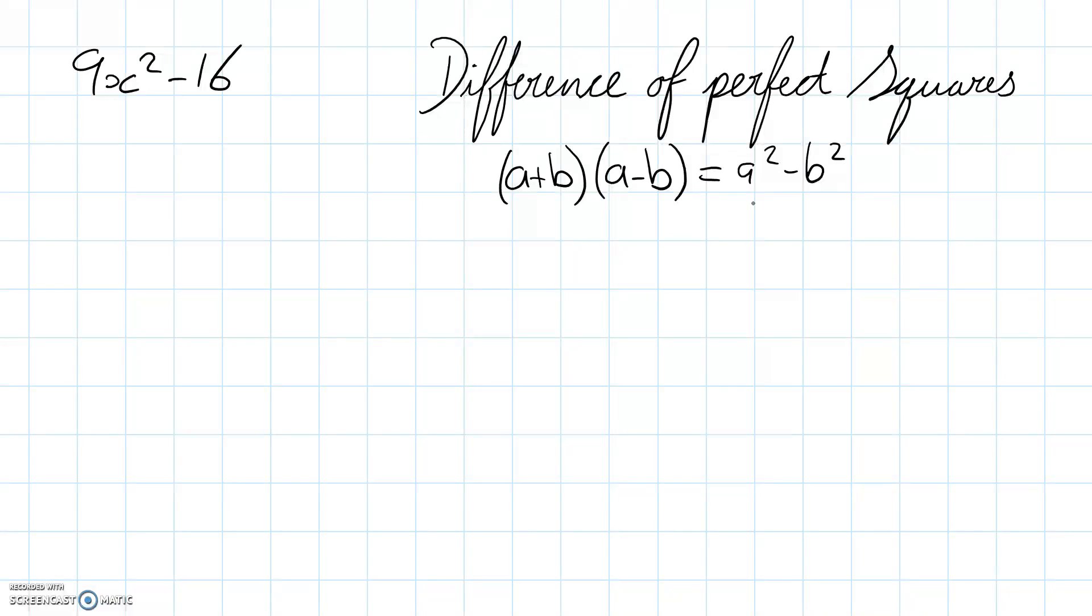I'm going to expand it out using the distributive law. So first, outside, inside, last gives us a times a is a², a times negative b is minus ab, b times a is plus ab, and then b times negative b is minus b².